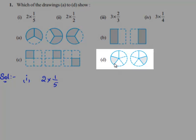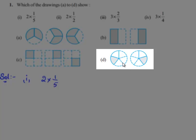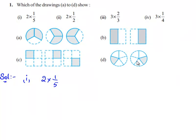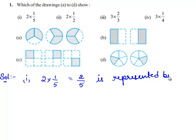When we observe drawing D, we see two circles, each divided into five parts. In both circles, one part out of five is shaded. Therefore each circle represents the fraction 1 by 5. Since there are two circles, this is represented as 2 times of 1 by 5, which equals 2 by 5. So the fraction 2 times of 1 by 5 is represented by drawing D.